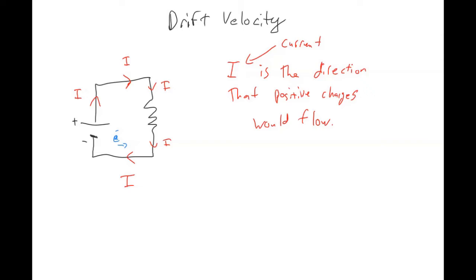Another misconception you might have: you might think that if you turn on a battery and have a charge starting at one point, and there's a light bulb in the circuit, that the light bulb won't turn on until that specific electron makes it all the way to the light bulb. But that's not how electricity works.